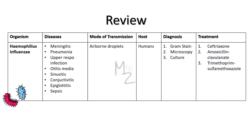Quick recap: The organism we discussed today is Haemophilus influenzae, responsible for causing meningitis, pneumonia, and upper respiratory tract infections like otitis media, sinusitis, conjunctivitis, epiglottitis, and sepsis. Mode of transmission: it enters the human body via airborne droplets into the respiratory tract. Hosts are human beings and there is no animal reservoir. Diagnosis is based on gram staining, microscopy, and culture done in chocolate agar instead of blood agar. For treatment we use ceftriaxone, amoxicillin-clavulanate, and trimethoprim-sulfamethoxazole. If you've got any suggestions, feel free to leave them in the comments. Connect with me on Instagram and Twitter at medzukhruf. Assalamu Alaikum.